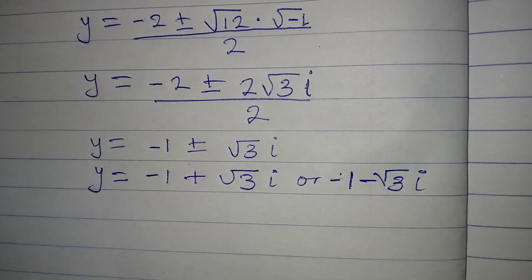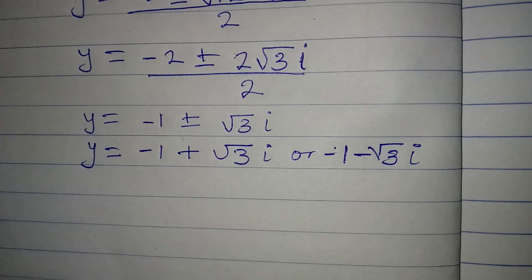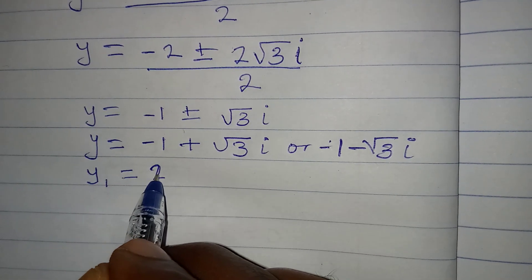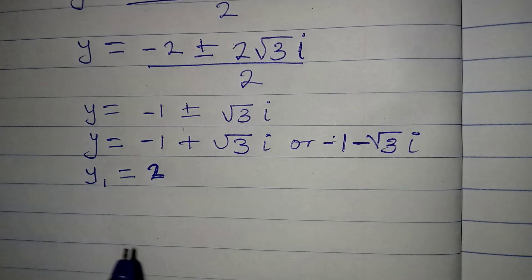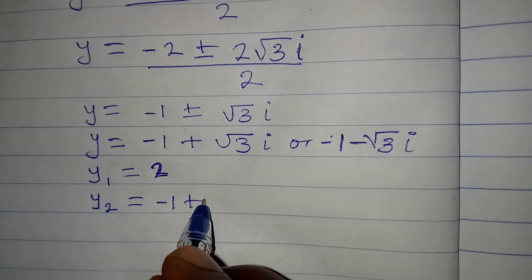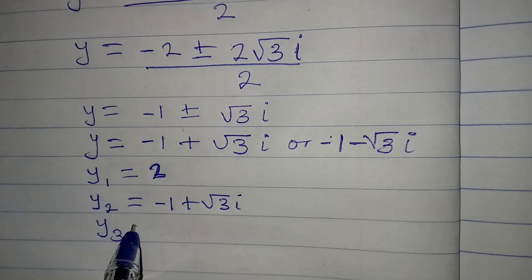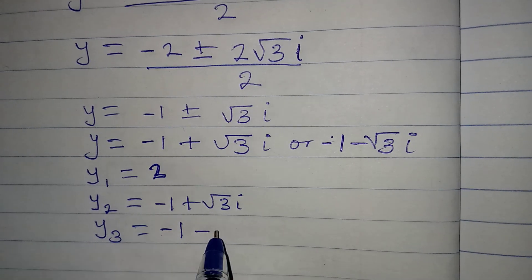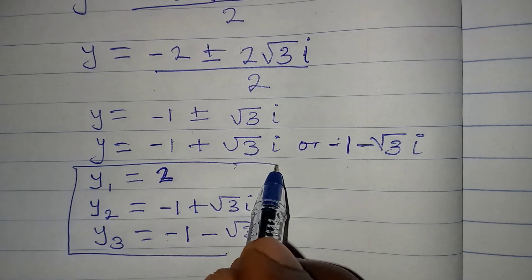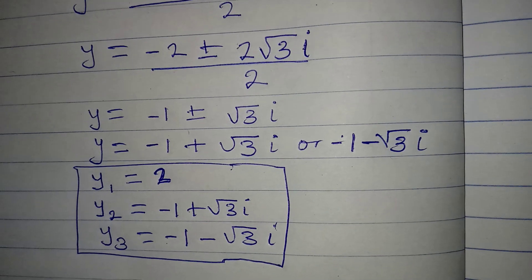Bringing all three solutions together: y1 equals 2, y2 equals minus 1 plus square root of 3 i, and y3 equals minus 1 minus square root of 3 i. Note that only the first solution, y1 equals 2, is a real solution; the other two are complex.